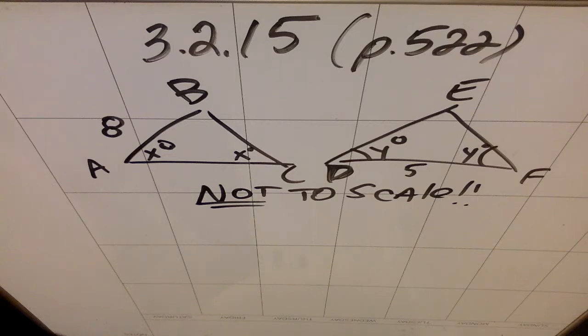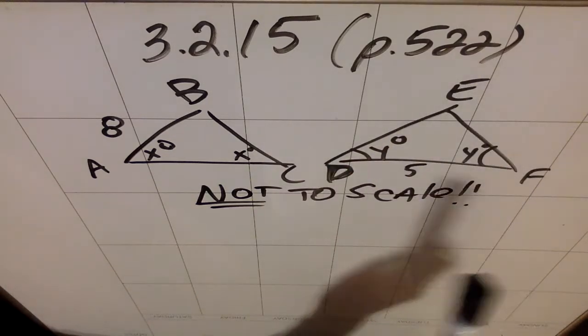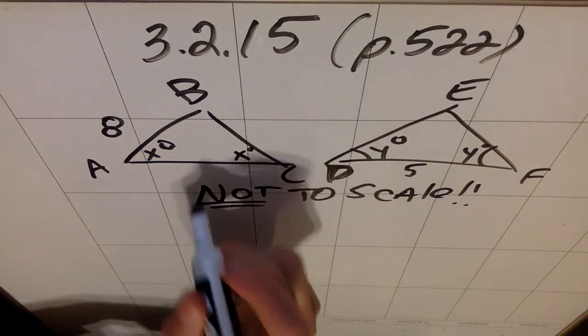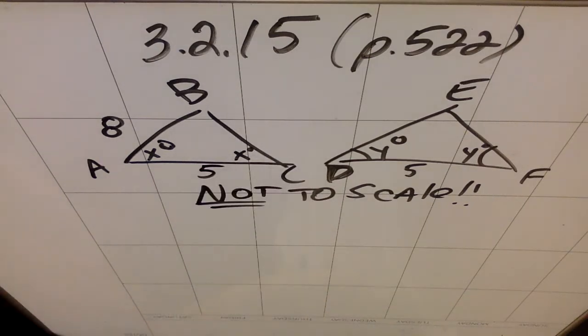So if Y equals 60 in triangle DEF, so both of those are 60s, how much greater is the perimeter of ABC than the perimeter of DEF? Oh sorry, this is a 5, my bad. All right, so here's the deal.